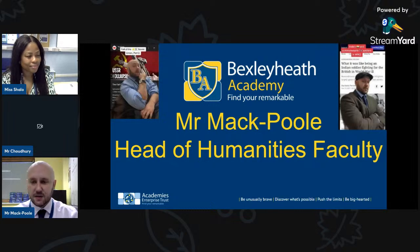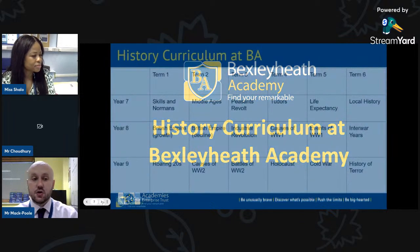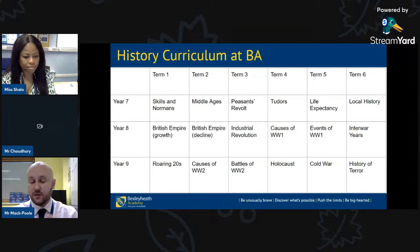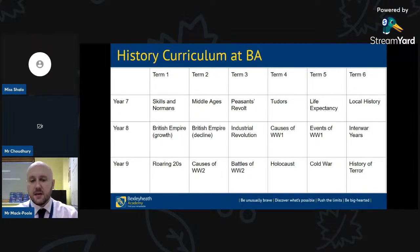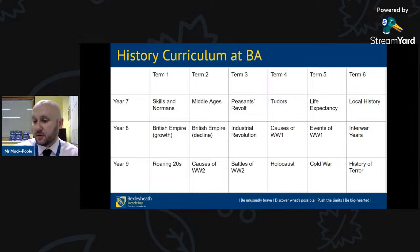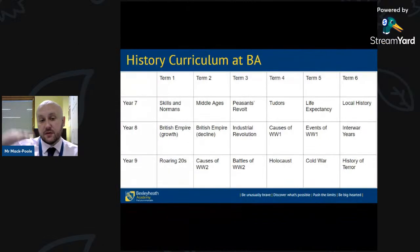So the history curriculum at BXA — we start in Year Seven at 1066, the formation of the English nation, and go on a journey through history all the way to the Cold War and the history of terror. In Year Seven you'll study the Middle Ages and the Peasants' Revolt — which actually happened locally right here in Erith. You may not have known that! There was much more travel between people on the north and south of the Thames.